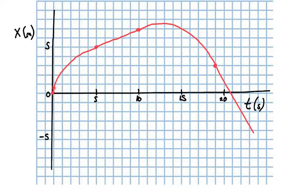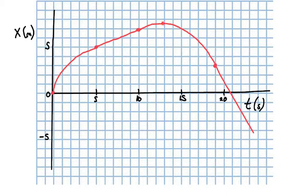Looking at the slope: here we have a steep positive slope, so a large positive velocity. Here a smaller positive slope, so a smaller positive velocity. For this straight line segment we'd have a constant positive slope, so a constant positive velocity. Up top here we'd say we get to a slope of 0, so a velocity of 0.